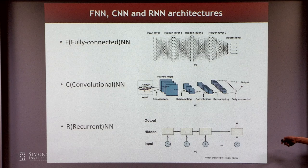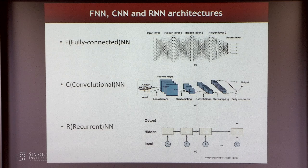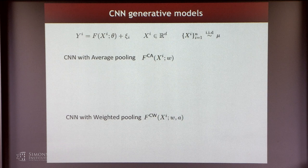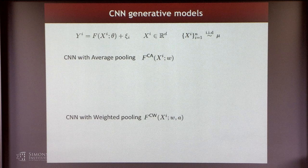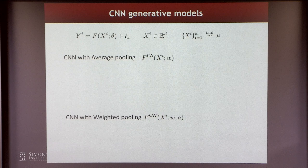To set up the architecture more concretely, we'll consider a setting where we assume generative models for these three settings. We'll assume the label y_i is generated according to one of these models plus noise, where noise will have some standard sub-Gaussian properties. The input is d-dimensional and all inputs are sampled IID from some distribution. We are in a realizable setting: if I believe my data was actually generated from a convolutional neural network model, how well can we learn its parameters?